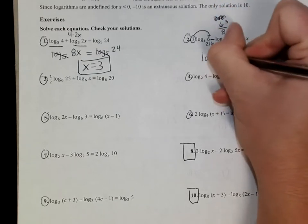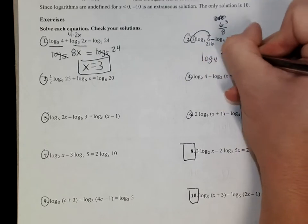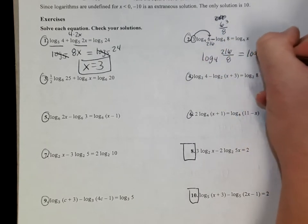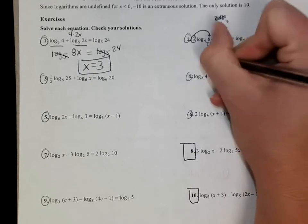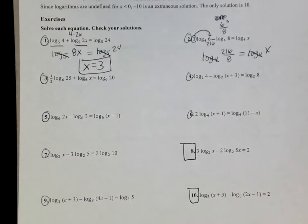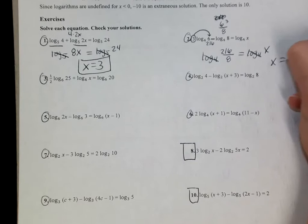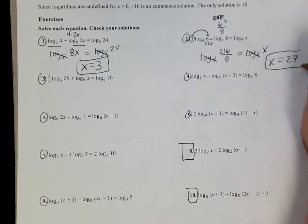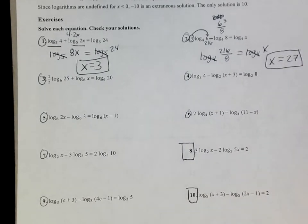When I put this together, that's 6³ divided by 8. So this becomes log₄ of 216 divided by 8 equals log₄ of x. Well, you cancel that out. 216 divided by 8 is 27.